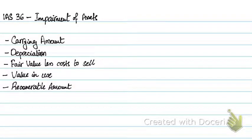IAS 36 refers to impairment of assets. Before moving forward to what this standard is about, let's look at some of the terminologies that IAS 36 uses. One key term is carrying amount.